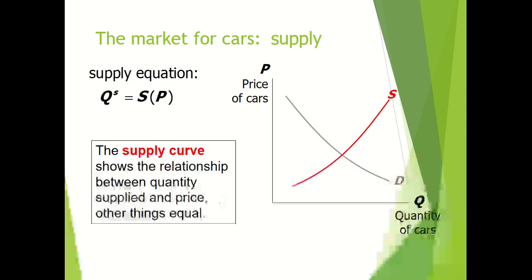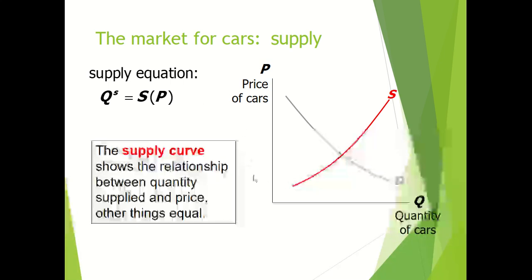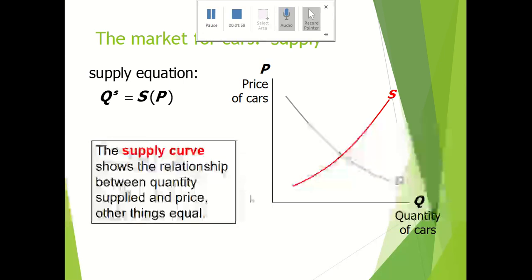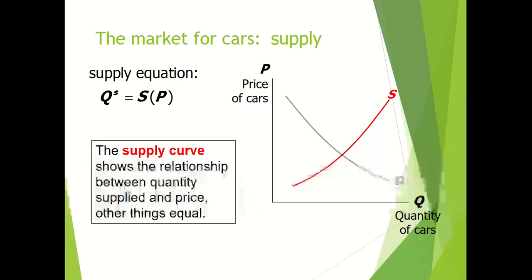Now comes the market for car supply. Similarly, in order to bring equilibrium in this market, we draw a supply curve as well. Supply of a car is a function of its own price and the price of input. The price of car is positively related with supply. If the price of car increases, it gives incentives to producers to produce more cars and they supply more cars in the market.